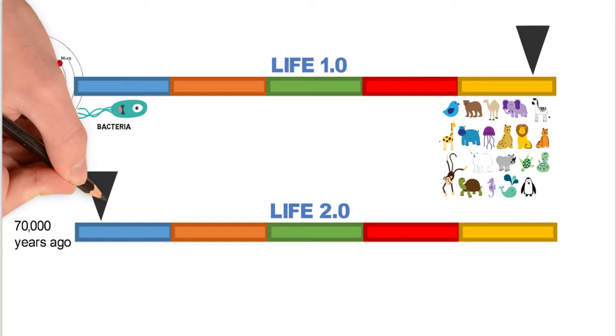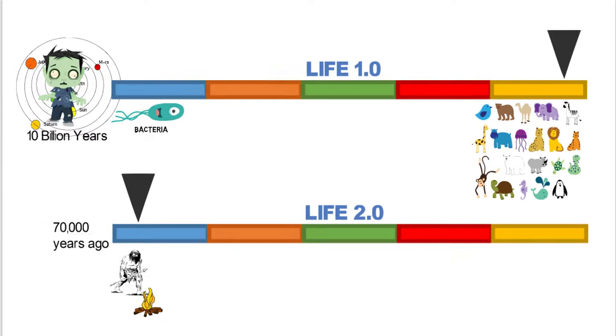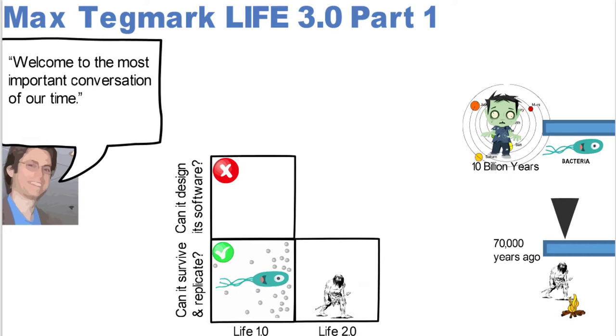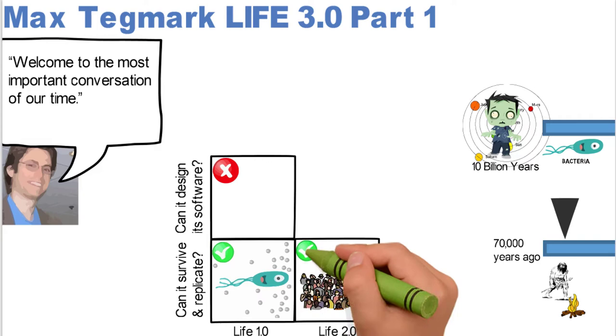But then about 70,000 years ago, he identifies the beginning of Life 2.0, and that was when all of a sudden along came sapiens with some of his early technologies. And sapiens at Life 2.0 not only could survive and certainly replicate, but the species sapiens also had the capability to actually design some of its own software.